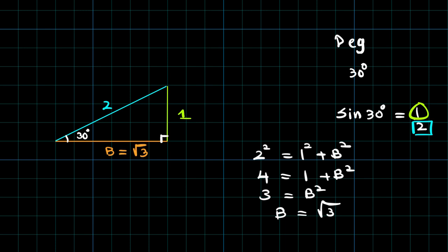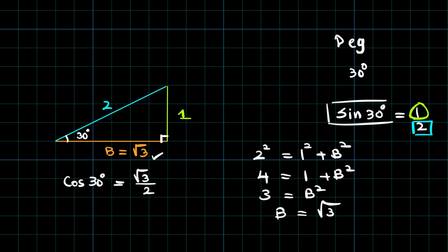From this single diagram, what else can I calculate? I was given the information that sine of 30 is half. Now I can write down by looking at the diagram cosine of 30, which is adjacent or the base over the hypotenuse, so that is square root 3 over 2. And last but not the least, tangent of 30, which is 1 over root 3, which simplifies to root 3 over 3 in the rationalized form.